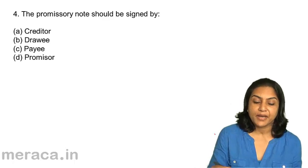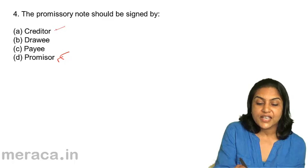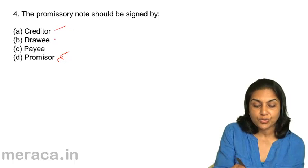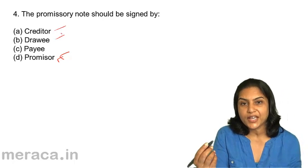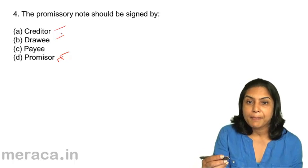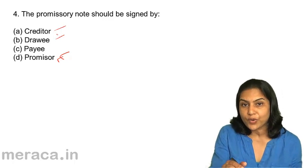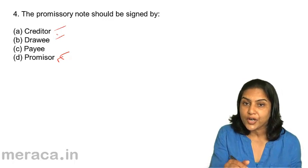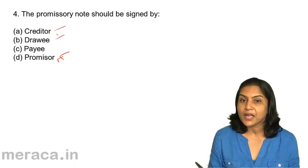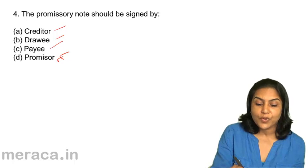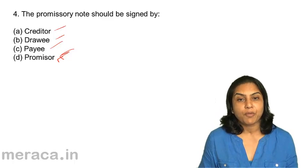It is signed by the promissor. The creditor has to receive the payment, so he will not sign the promissory note. In the example where X sells goods to Y, Y makes the promissory note and signs it. Y is not the creditor, not the drawee — X draws on Y, so X is the drawee. X is the payee. Therefore Y is the promissor, and the promissory note should be signed by the promissor.